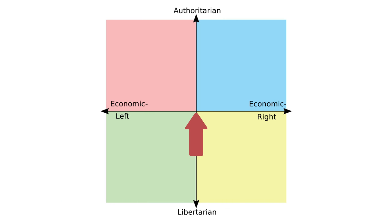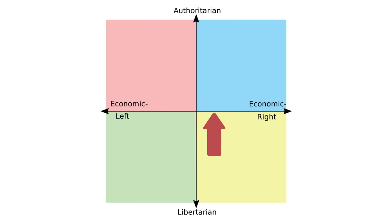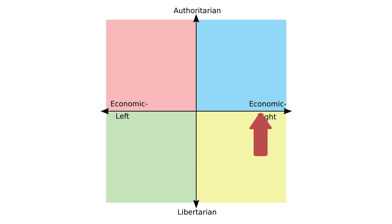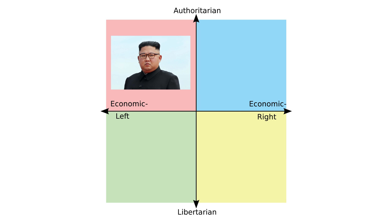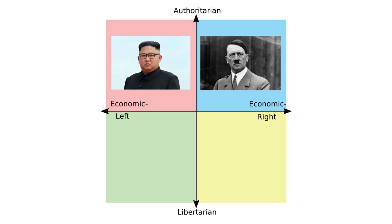A lot of people get hung up on the left-right portion and conflate one side or the other with authoritarianism. This is a mistake. Any point on the left-right spectrum is capable of authoritarianism. For example, you'll find leaders like Kim Jong-un on the left and Adolf Hitler on the right. There's a vocal subset of figures on the right who love to claim that Hitler was a leftist, but we'll get to that later in the video.